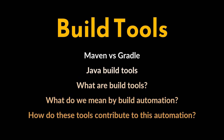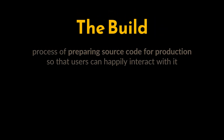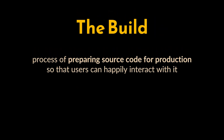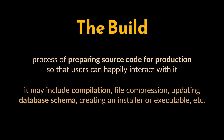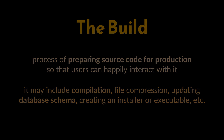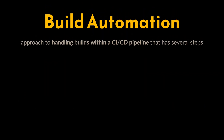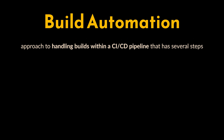Let's start with the build itself. The build is a process of preparing source code for production so that users can happily interact with it. It may include compilation, file compression, updating database schema, creating an installer or executable file, etc. Now, automating that build — or build automation — is an approach to handling builds within a CI/CD pipeline.